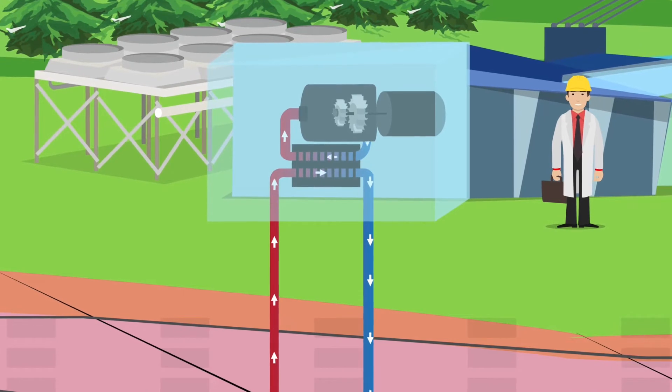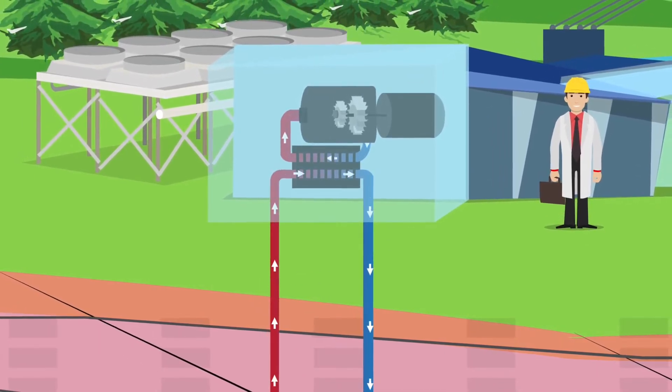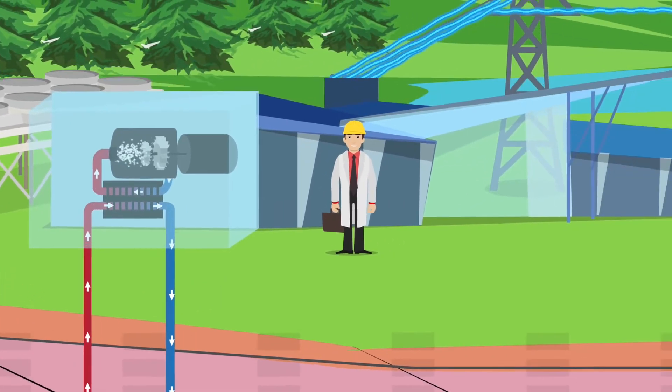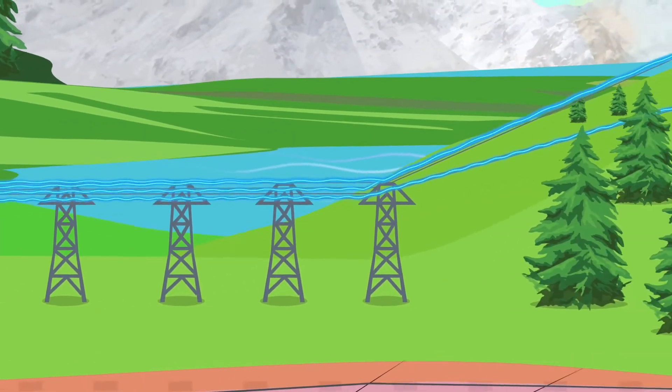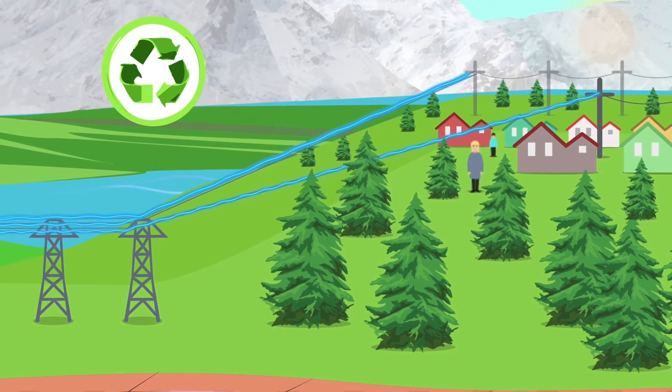Binary turbine power plants use hot formation water to vaporize another fluid. The second fluid drives a turbine and generator to produce electricity. This closed-loop system produces no emissions and has one of the smallest environmental footprints of any power supply.